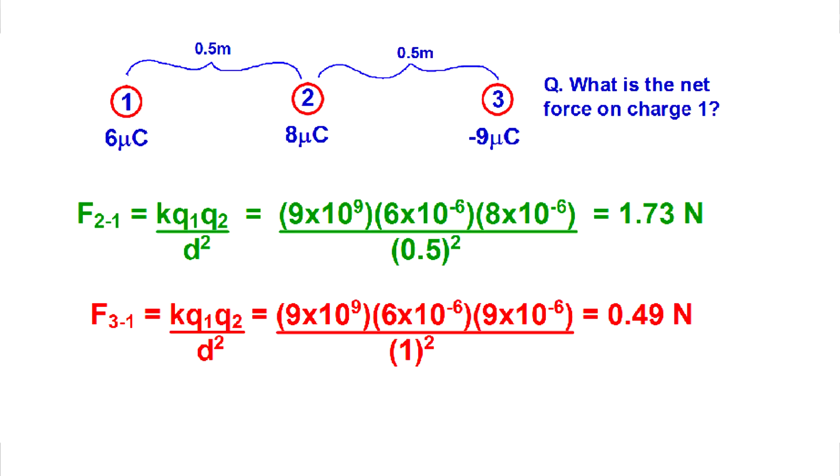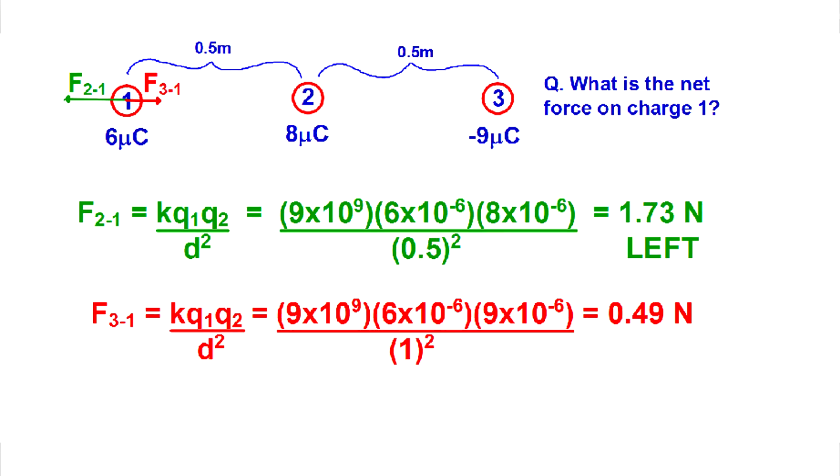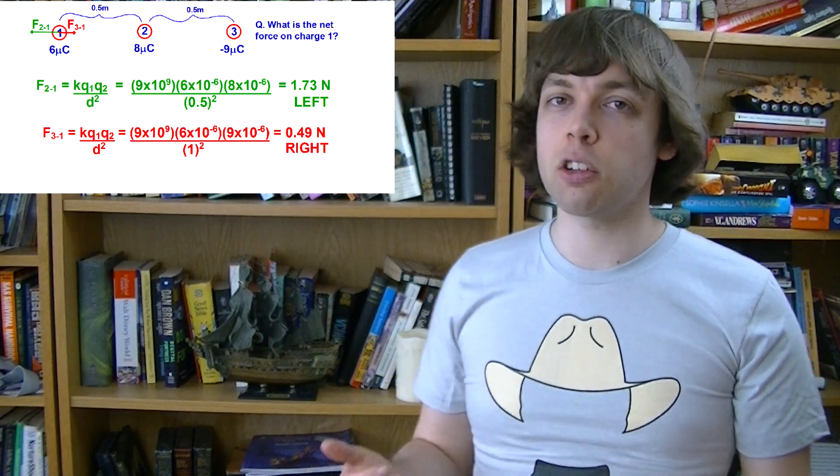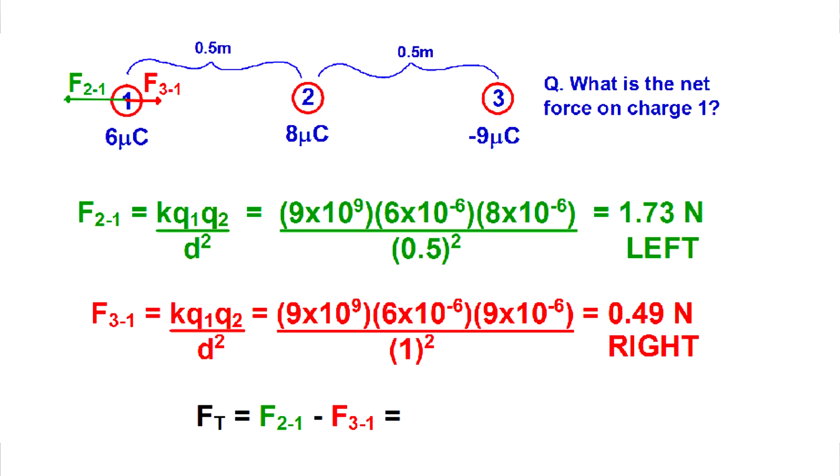Well, let's remember that forces are vectors, so we can add up those vectors. Since charges 1 and 2 are positive, they're going to repel each other. So charge 1 will be pulled left by charge 2. Charge 3 is negative, so the force between charge 1 and 3 is going to be attractive, since opposites attract. This means that charge 3 is going to pull charge 1 to the right. So these two forces we calculated are actually in opposite directions. We can subtract them to find the net force. And since the one to the left is bigger, the total net force will be to the left. So our final answer is 1.24 newtons to the left.